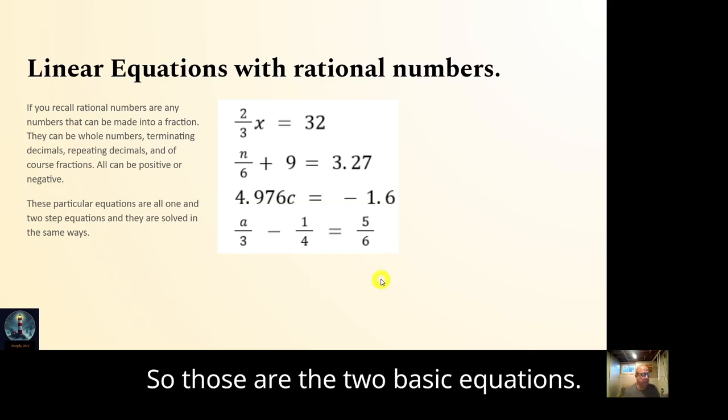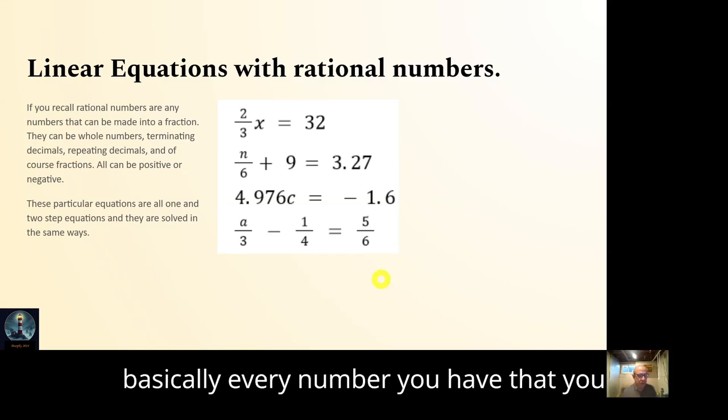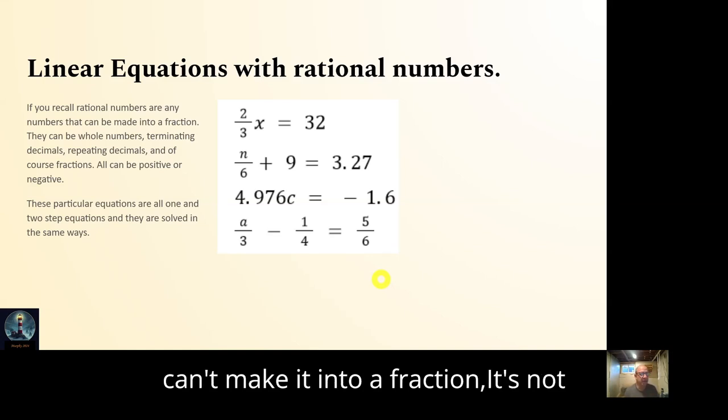When we say with rational numbers, that just means we're adding fractions or decimals. Those are rational numbers. The definition of rational numbers is basically every number you have that you can make into a fraction. And if you can't make it into a fraction, it's not rational or it's not sane. We call it irrational.